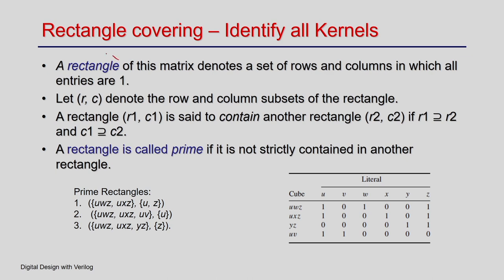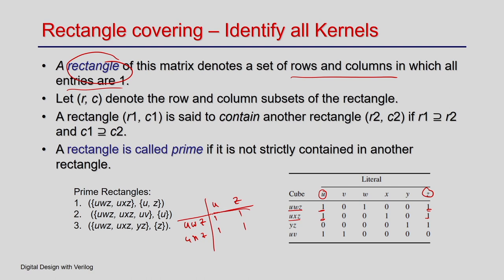Now define a rectangle in this matrix as a subset of rows and columns where all entries are 1. For example, taking rows uwz and uxz and columns u and z — the entries at those positions are all 1 — this forms a 2×2 rectangle.